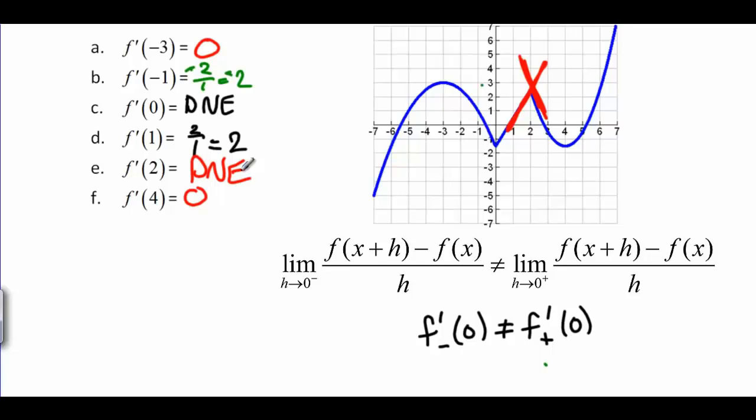So what we've learned here is a sharp corner means that the derivative there does not exist.